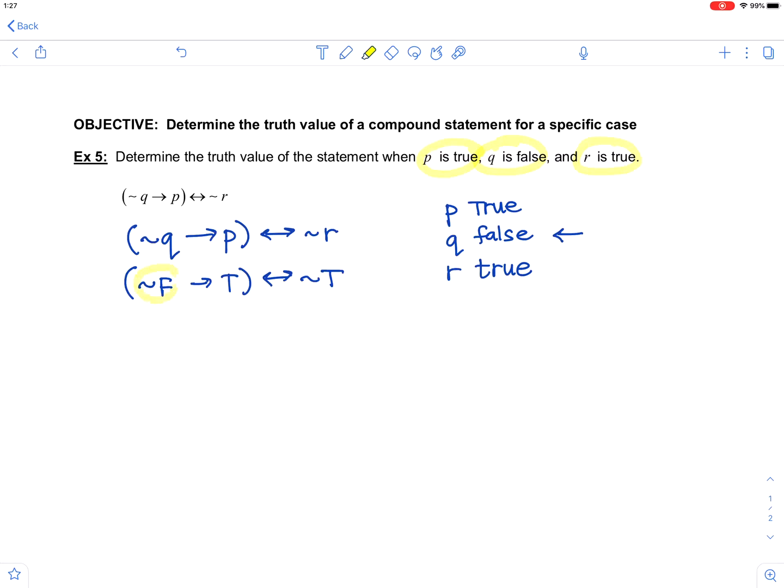Then I will go ahead and change the negations to their opposite truth value. So I'm actually looking at true implies true if and only if not true would be false.